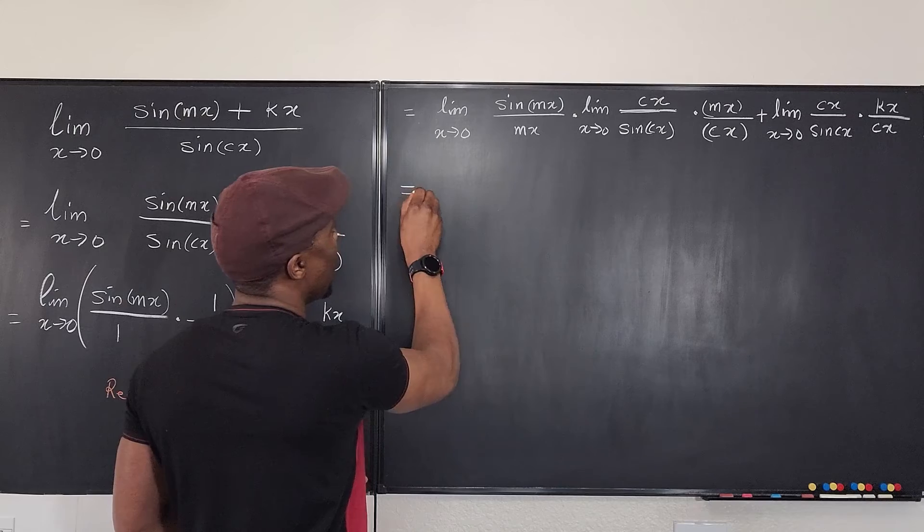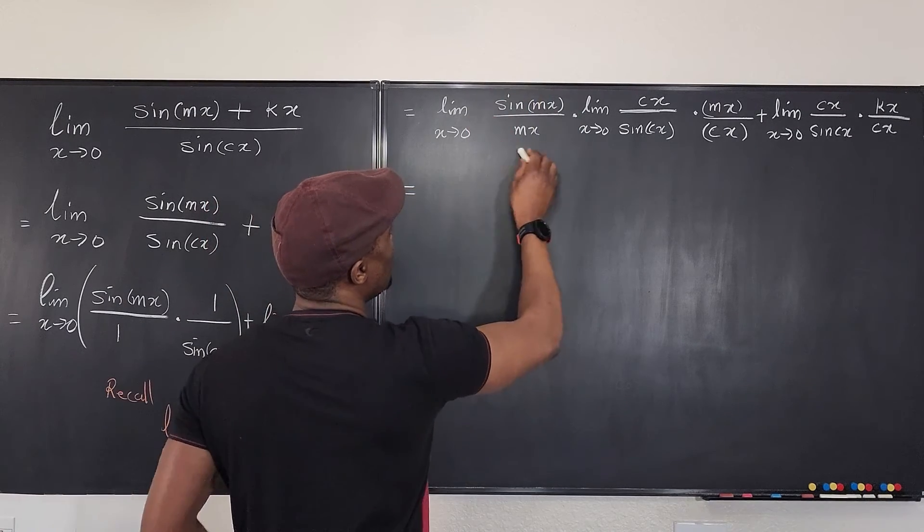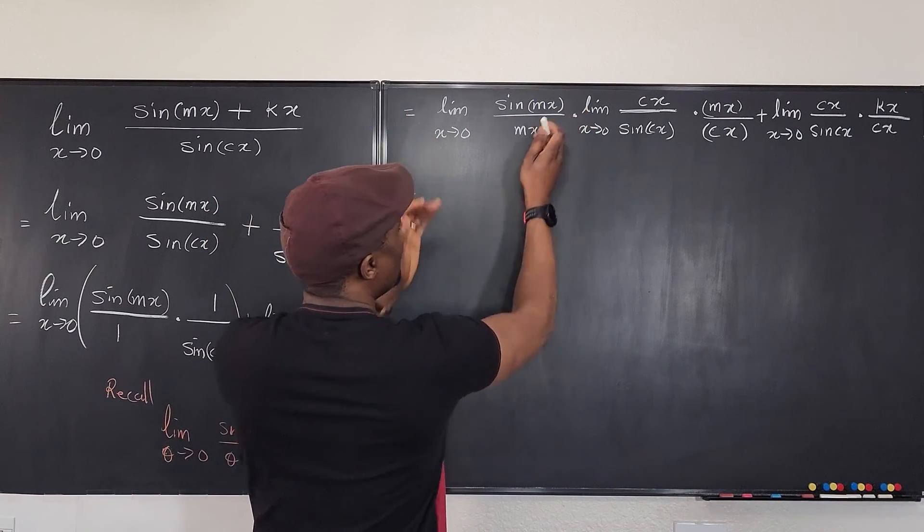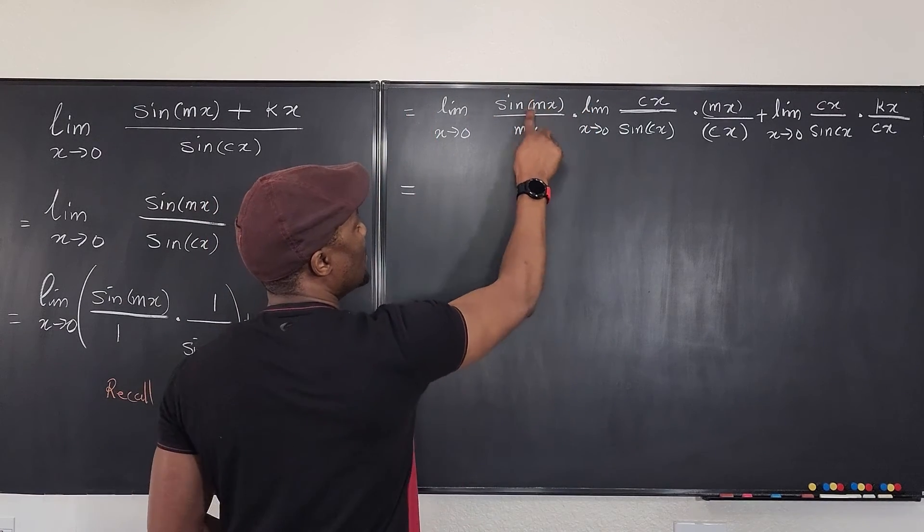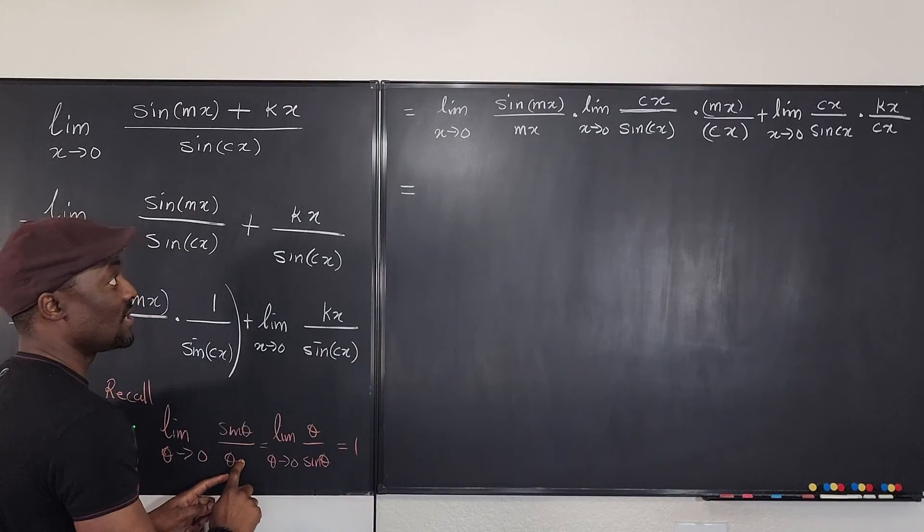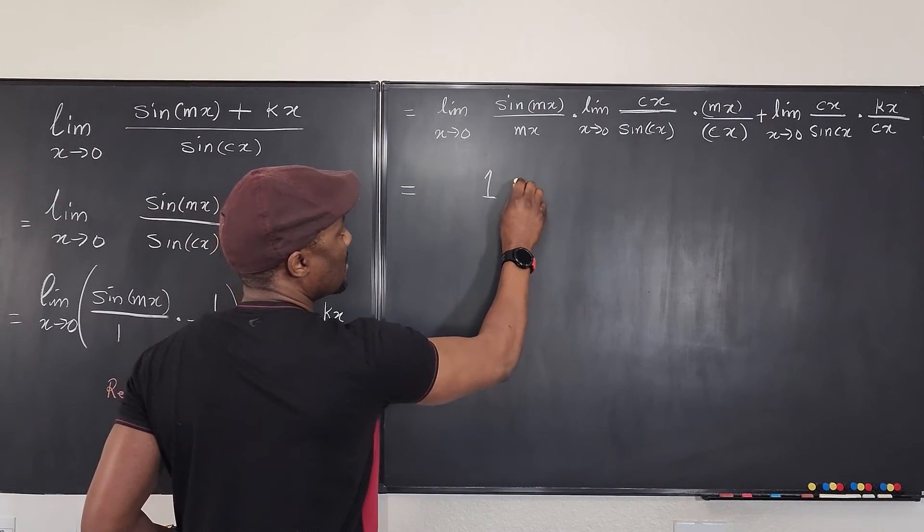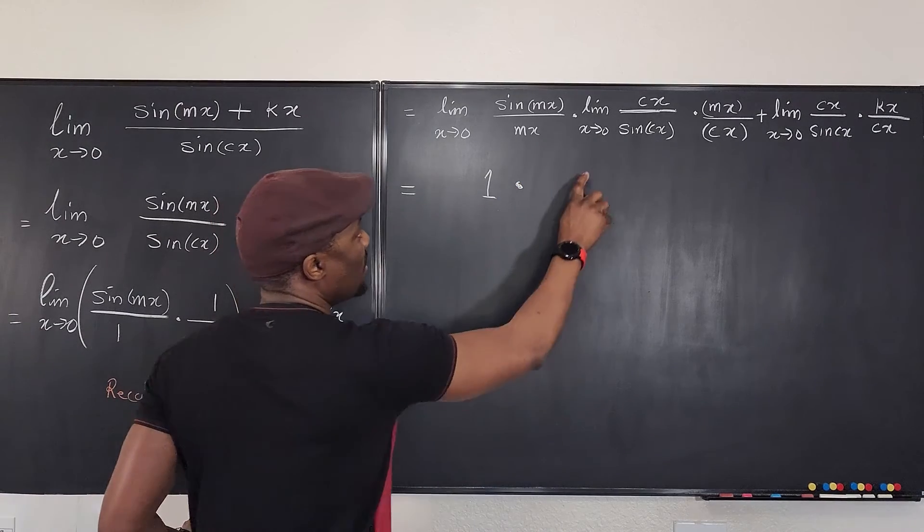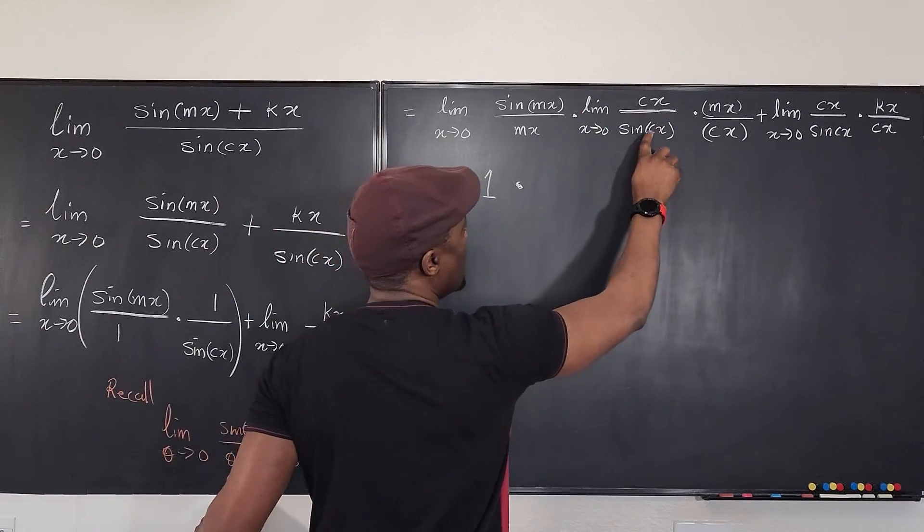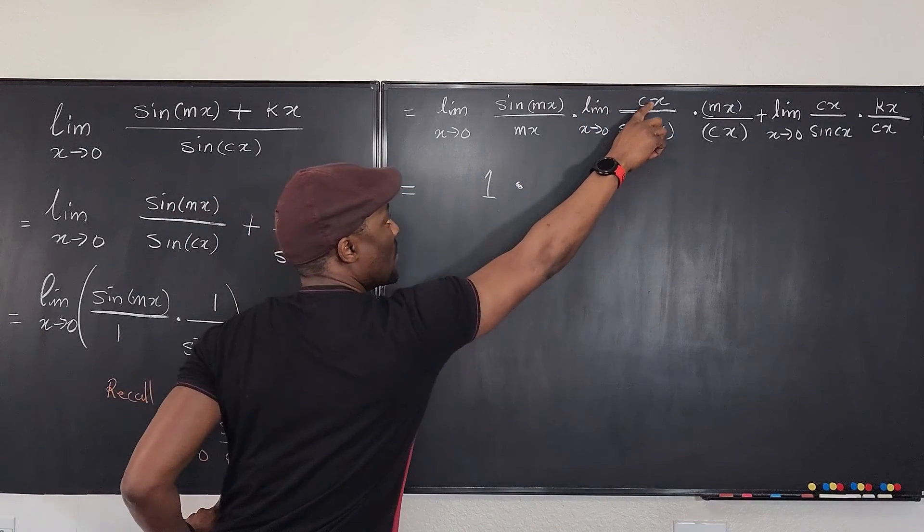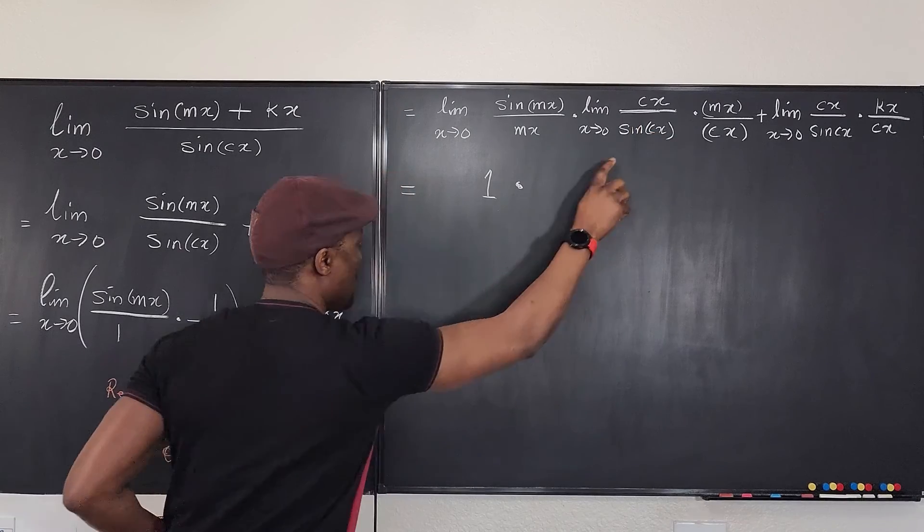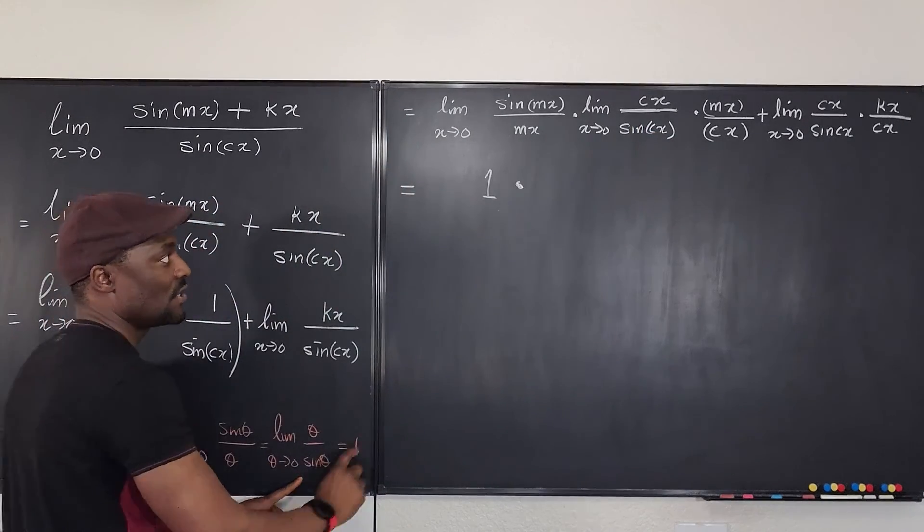Now see what we got. We know this limit here will go to one because this goes to zero and this goes to zero and it matches this description. So this is going to be one times. What do we have here? We're going to have this also goes to zero. This goes to zero and this goes to zero and it matches this one, which is also one.